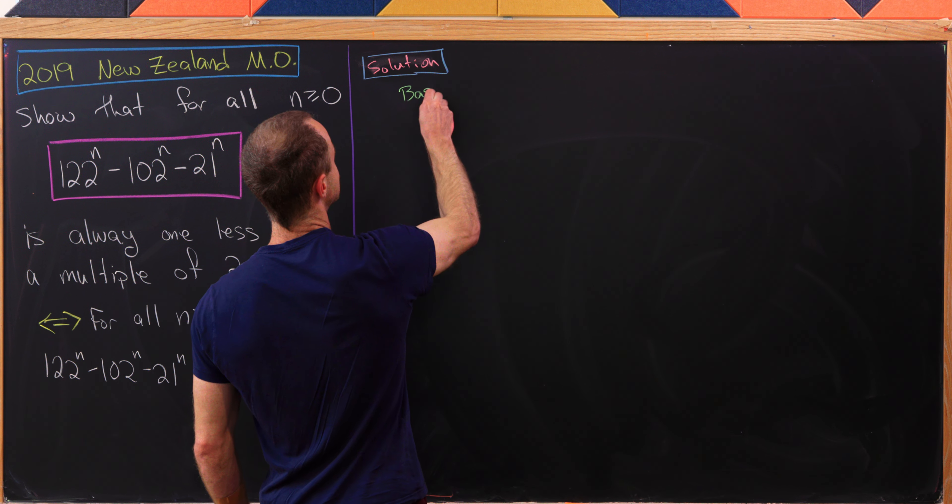So there we have it with the base case. Now, let's make an induction hypothesis. And that will be, let's suppose, for some k bigger than or equal to 0, the statement holds. So in other words, 122^k - 102^k - 21^k is indeed congruent to negative 1 modulo 2020. But then what I'd like to do here before moving on to the next step would be to maybe solve for 122^k. So that'll give me 122^k is congruent to 102^k + 21^k - 1 mod 2020.